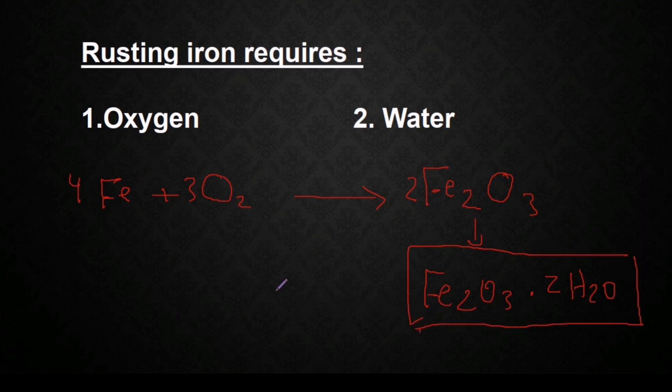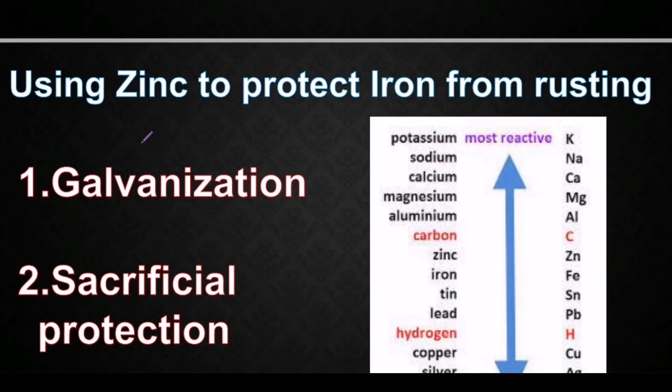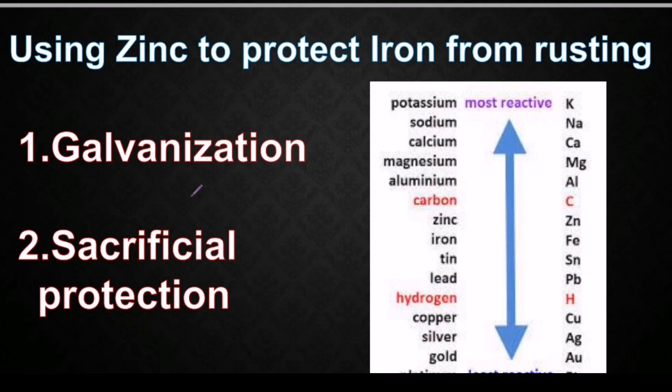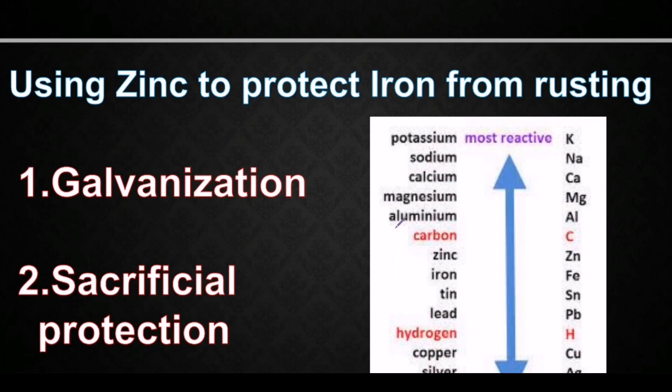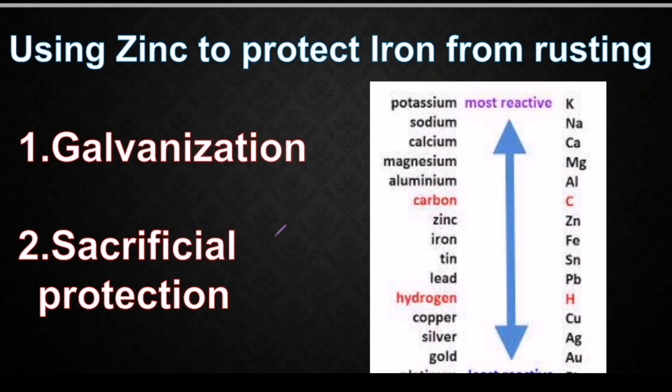Let's see how we can protect iron from rusting by using zinc. So actually by using zinc we have two different methods. The first one is called galvanization and the second one is called sacrificial protection. But basically both of them depend on the same chemical idea, which is using zinc because it's more reactive than iron in the chemical activity series. If we check the position of zinc, actually it's above iron, it means it's more reactive than iron. So in this case zinc will react instead of iron.